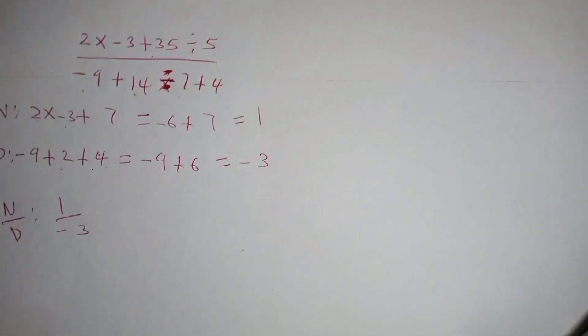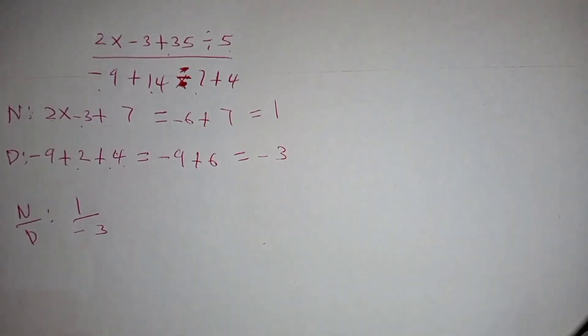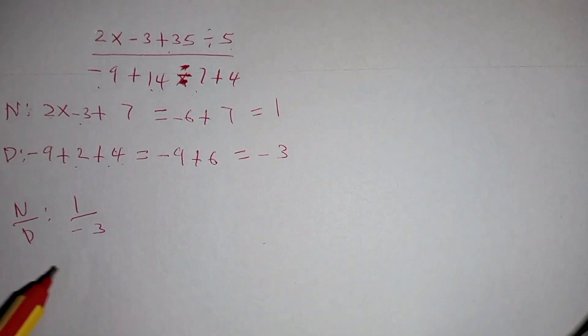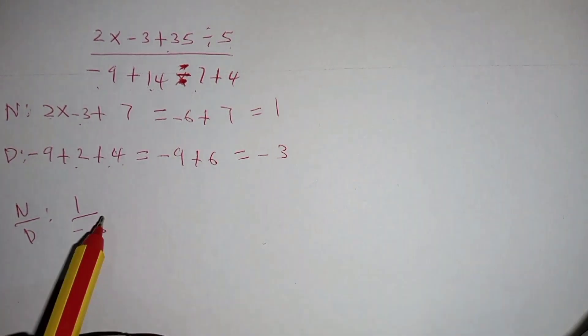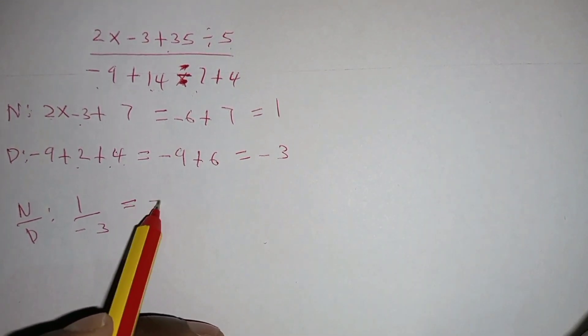So that is how you can solve that equation using simple steps with BODMAS together with integers. This is the same as negative one-third.